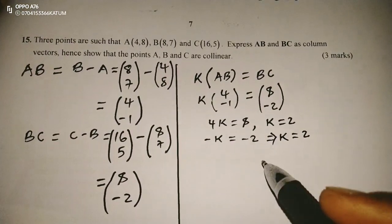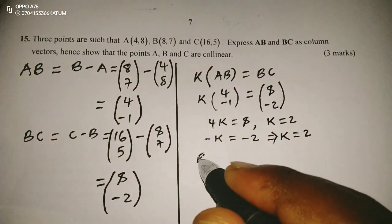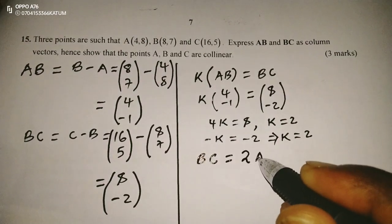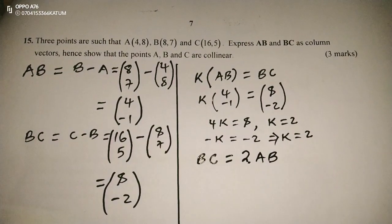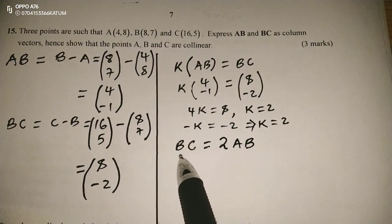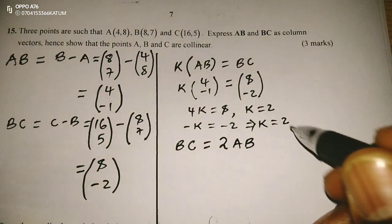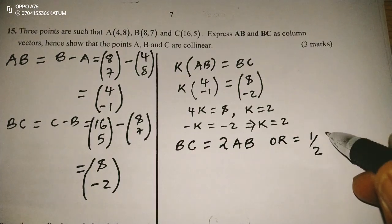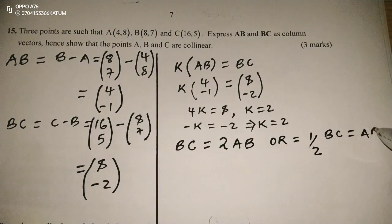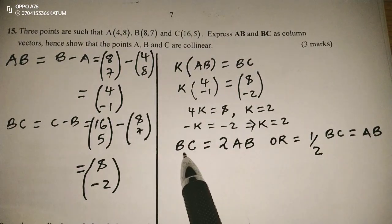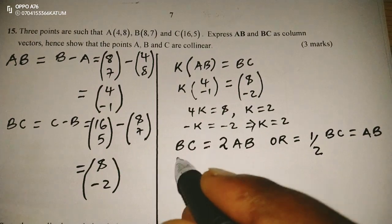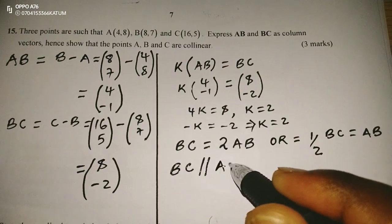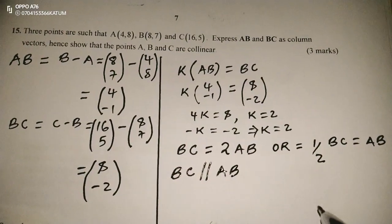This means that vector BC is equivalent to 2 times vector AB. Now that this vector can be expressed as a scalar multiple of the other, it means that BC and AB are parallel. Therefore, BC is parallel to AB since there is a scalar multiple between the two.